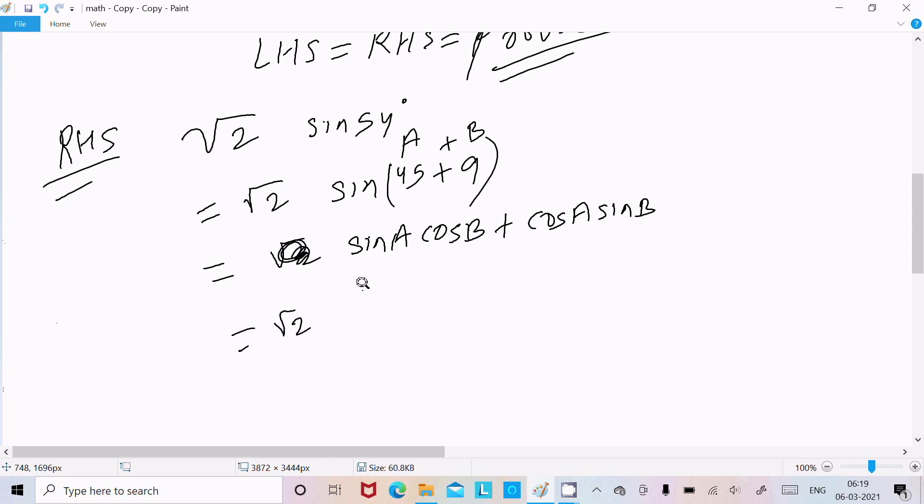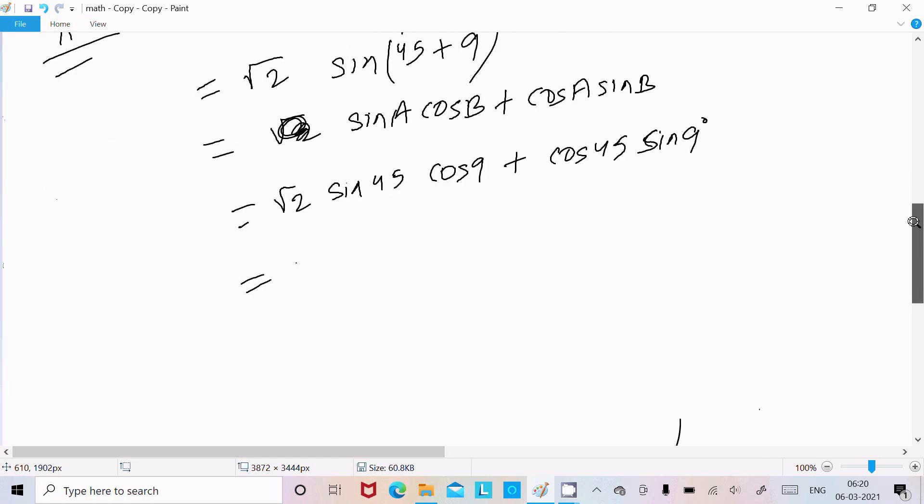So here √2, in place of sin A, sin 45, and cos B, cos 9, here cos A, cos 45, and here sin B, sin 9. Now here √2, the value of sin 45 is 1/√2.